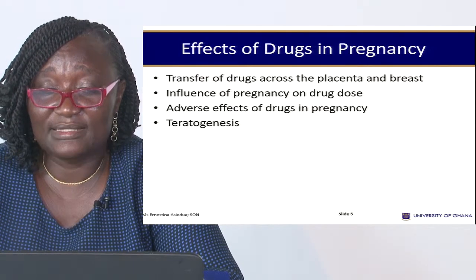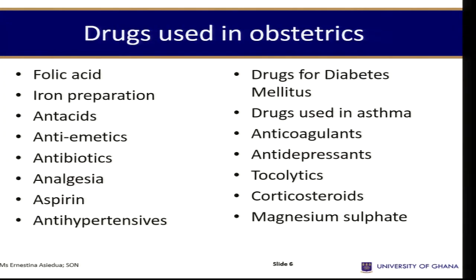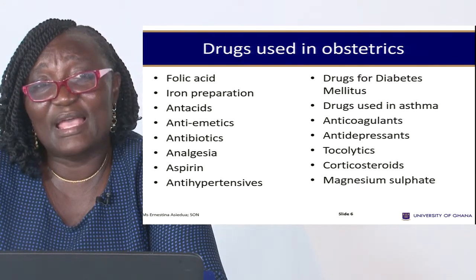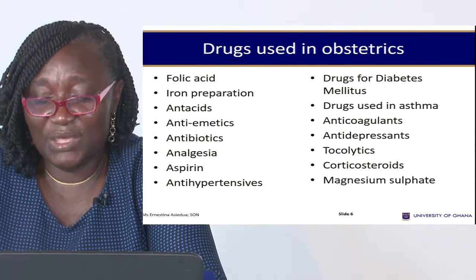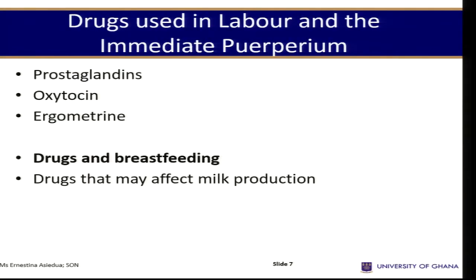These are the very common drugs used in obstetrics. If you want to go through all these drugs, you would need a pharmacology class. We'll look at the major classifications and mention some of the commonly used ones and their effects. In labor, basically we need prostaglandins, oxytocins, and ergometrine.